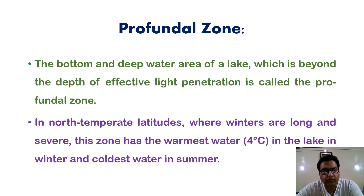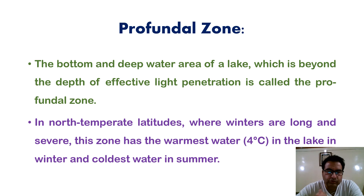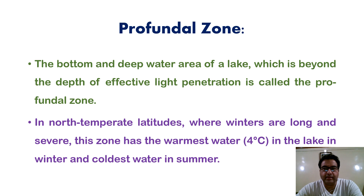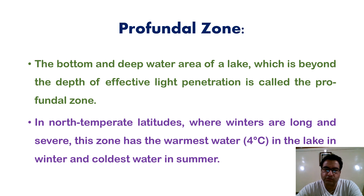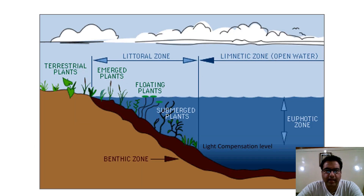The profundal zone is the bottom and deep water area of a lake beyond the depth of effective light penetration — the area below the light compensation point. In north temperate latitudes where winters are long and severe, this zone has the warmest water, up to four degrees centigrade, in winter and the coldest water in summer.